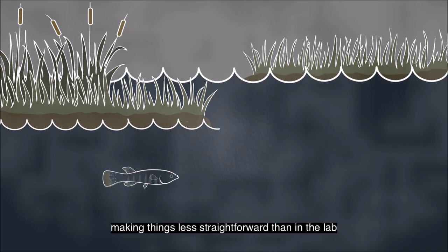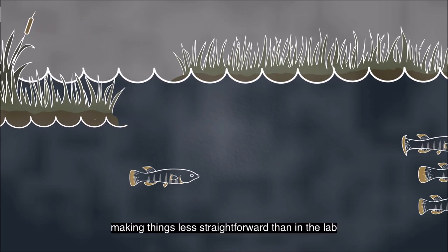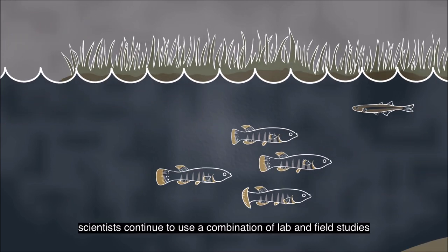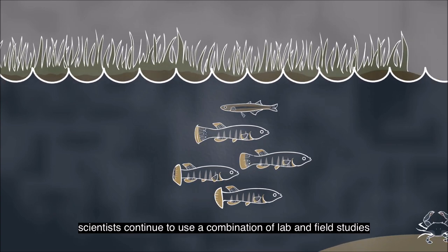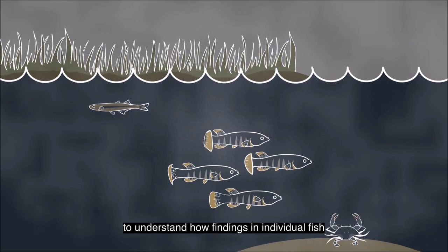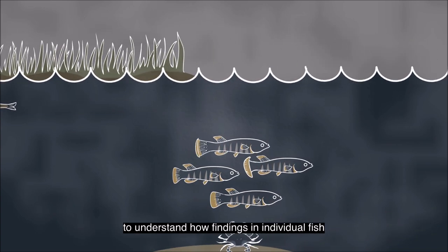There are many factors at play in the environment, making things less straightforward than in the lab. Because of this, scientists continue to use a combination of lab and field studies to understand how findings in individual fish translate to wild populations and communities of aquatic life.